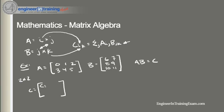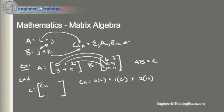Element C_11 is going to be equal to 0 times 6 plus 1 times 8 plus 2 times 10. As you notice, we work across row one and down column one of B to get the first element C_11, and that comes out to 28.